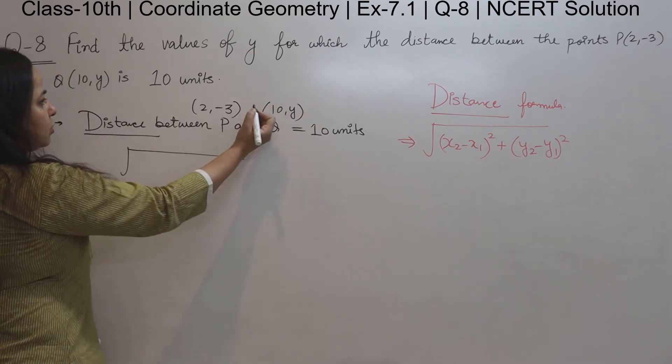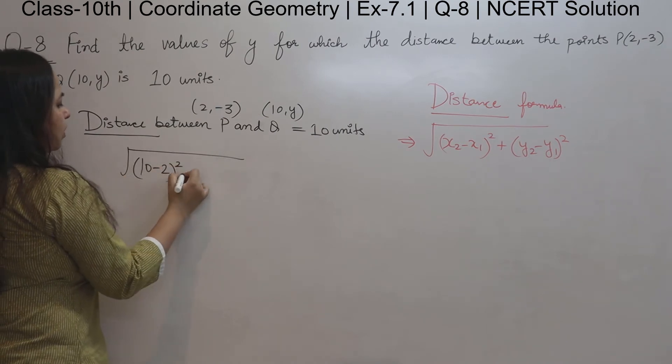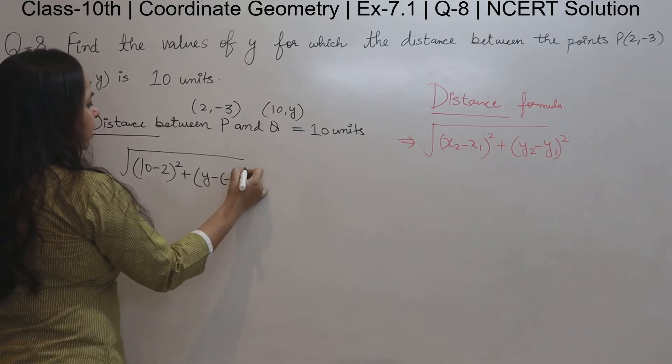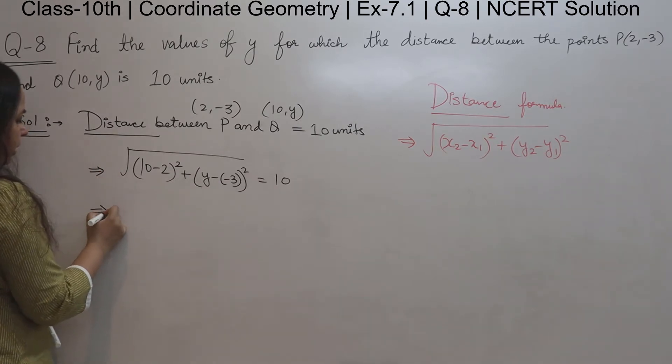So x2 minus x1 whole square: 10 minus 2 whole square plus y minus negative 3 whole square is equal to 10. This is a very simple question.